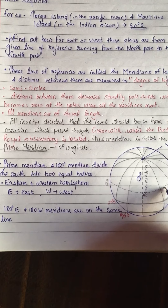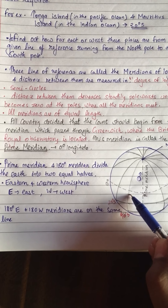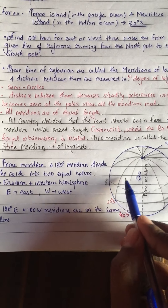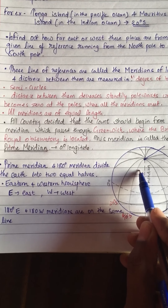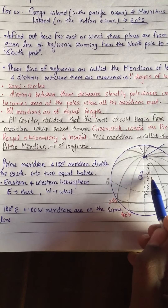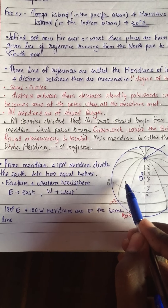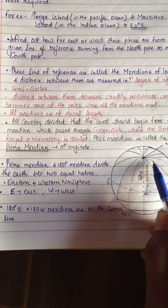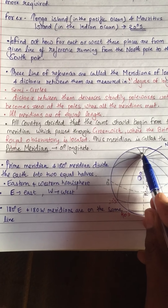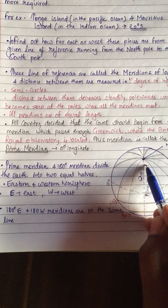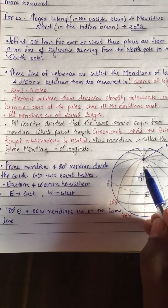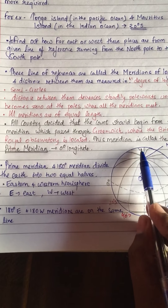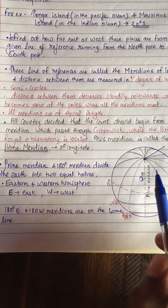The eastern side is known as the eastern hemisphere and the western side as the western hemisphere. Moving east from the prime meridian we write east, and moving west we write west. Interestingly, if we move 180 degrees from the east side, we reach 180 degrees east; and moving 180 degrees from the west side gives 180 degrees west. So 180 degrees east and 180 degrees west fall on the same line.